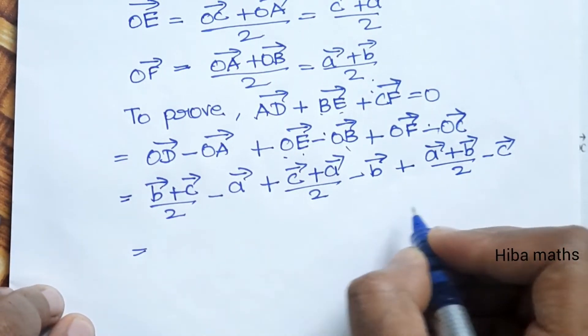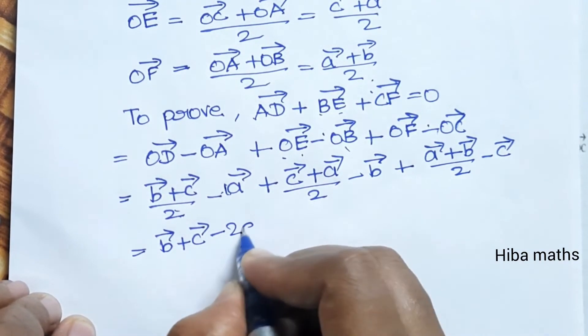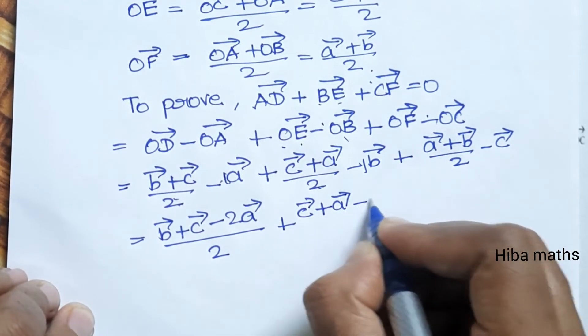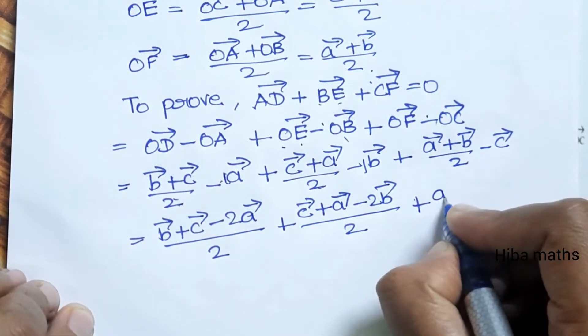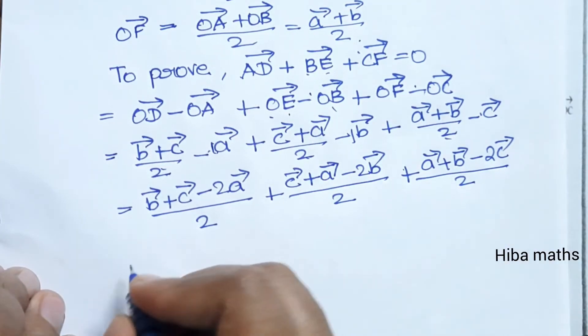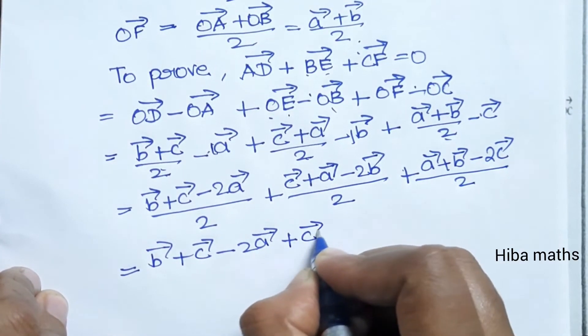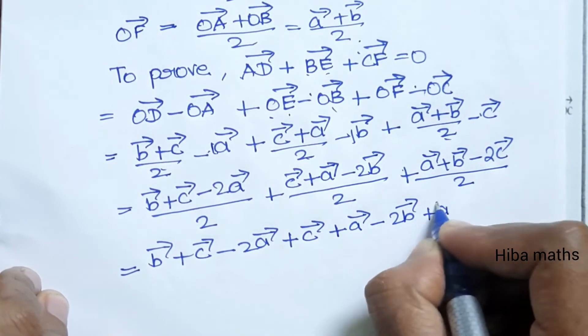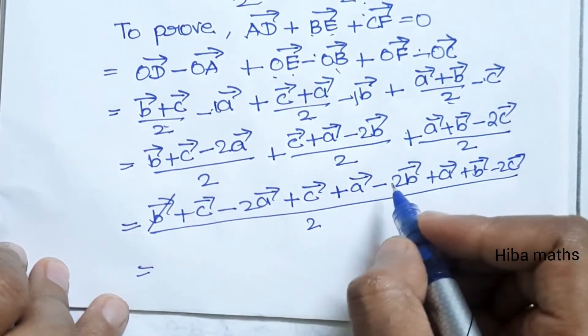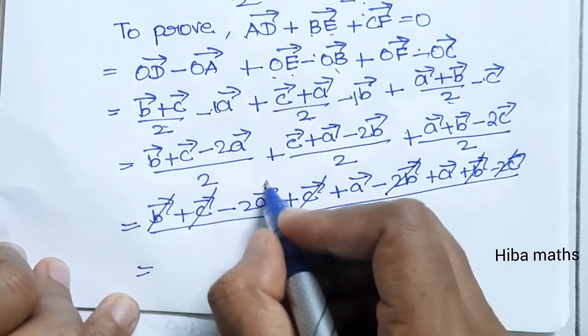Now let's simplify this. B vector plus C vector, if we take LCM, we get 2 times 2. So minus 2A vector divided by 2 plus C vector plus A vector, that is minus 2B vector divided by 2, plus A vector plus B vector minus 2C vector divided by 2. The denominator is 2, 2, 2 which equals 1. So this equals B vector plus C vector minus 2A vector plus C vector plus A vector minus 2B vector plus A vector plus B vector minus 2C vector.